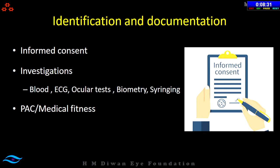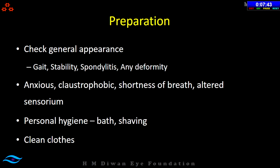Since most patients are elderly, medical clearance or pre-anaesthetic checkup should be obtained before scheduling surgery. Note the general appearance — if a patient has spondylitis or any deformity, a note should be made so special positioning changes can be made. Most patients visit the hospital for the first time and are anxious, so counseling is needed. For claustrophobic patients who cannot tolerate drapes on their head, transparent drapes are available for both eyes, or the patient may need to be scheduled for general anaesthesia.